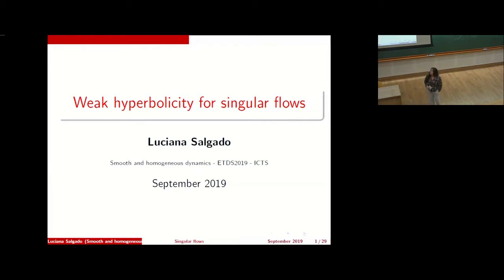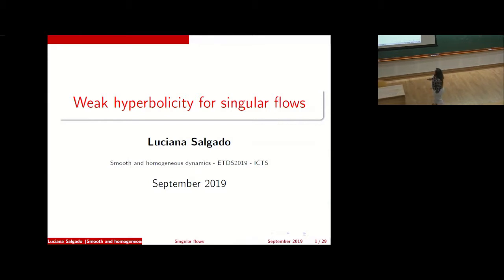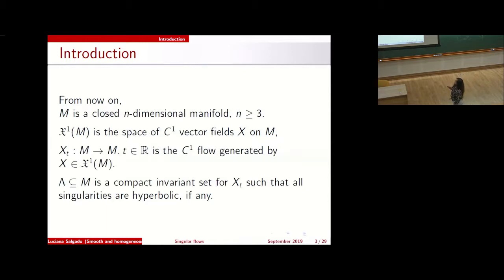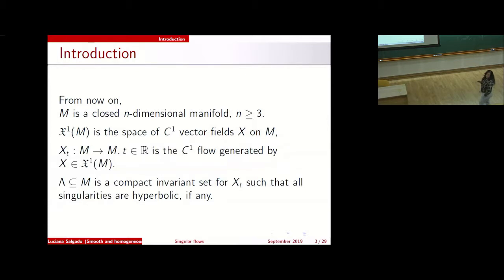I may talk about something related to what Stefano talked about today and on the Lorenz attractor. My setting is this: I have a closed manifold of any dimension, greater or equal to three. This is the space of C1 vector fields on M, and this is the flow generated by this vector field.